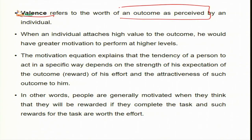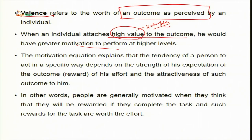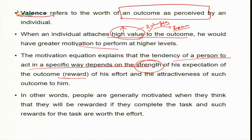Valence is the outcome — the value an individual attaches to the outcome. When an individual attaches high value to the outcome, he would have greater motivation to perform. High value doesn't mean a high amount of money; for example, if learning two chapters is the outcome of your effort and those two chapters are coming in tomorrow's exam, then the value of the outcome is very high. The motivation equation explains that the tendency of a person to act depends on the strength of his expectation of outcomes or reward.